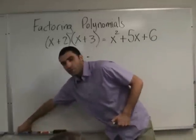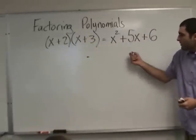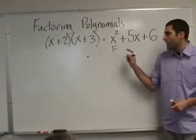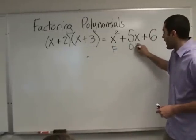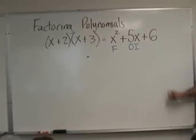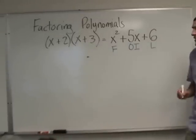Just to make it clear, you probably know that this is the F term. 5x is O and I, outer and inner terms added up. 6 is the L.